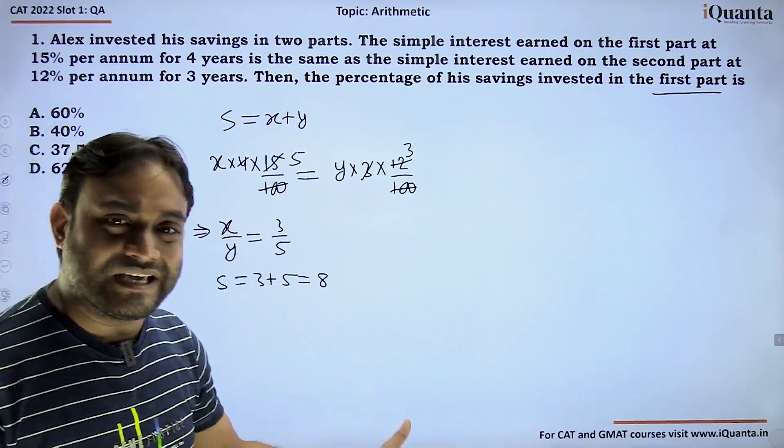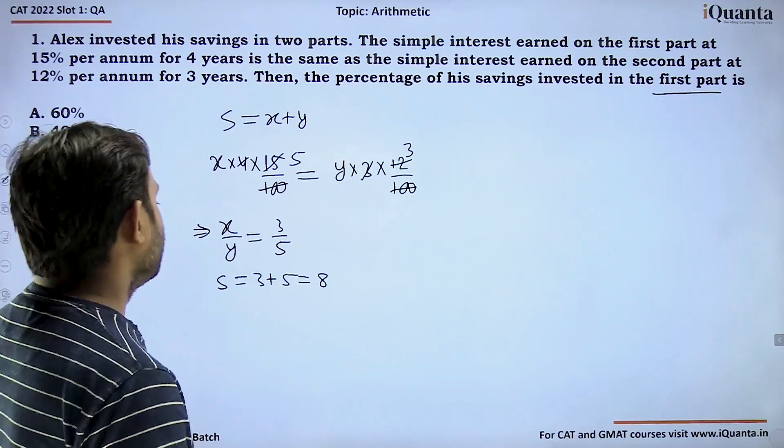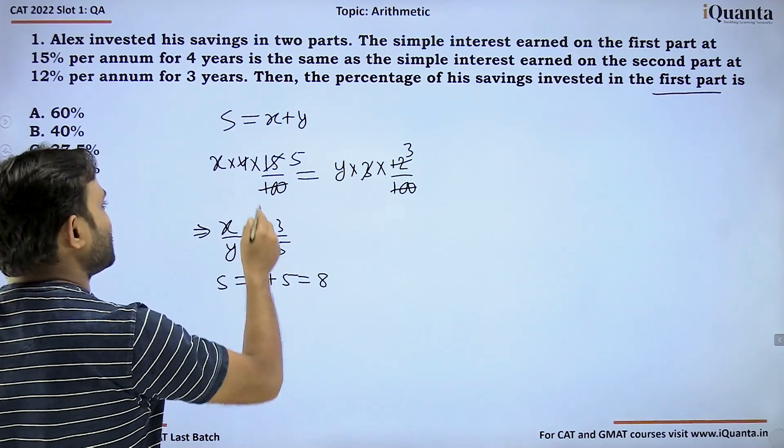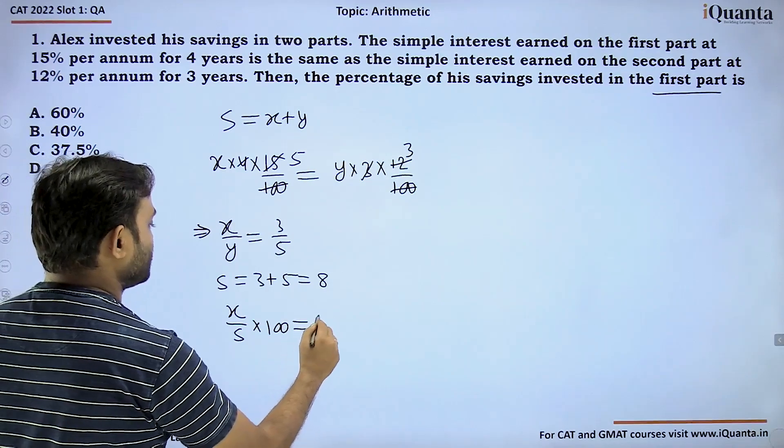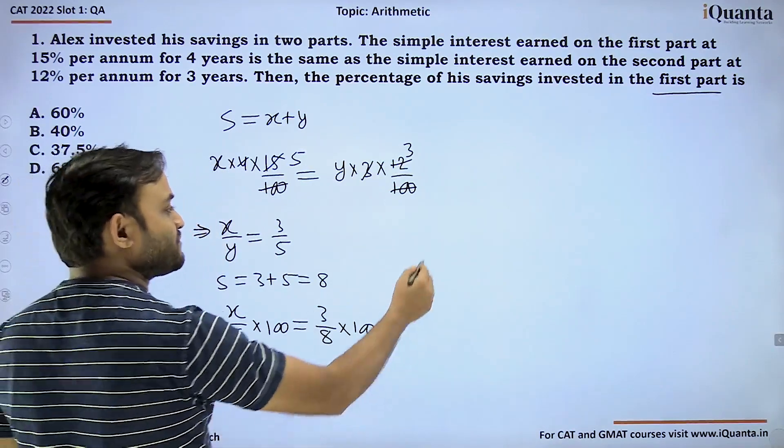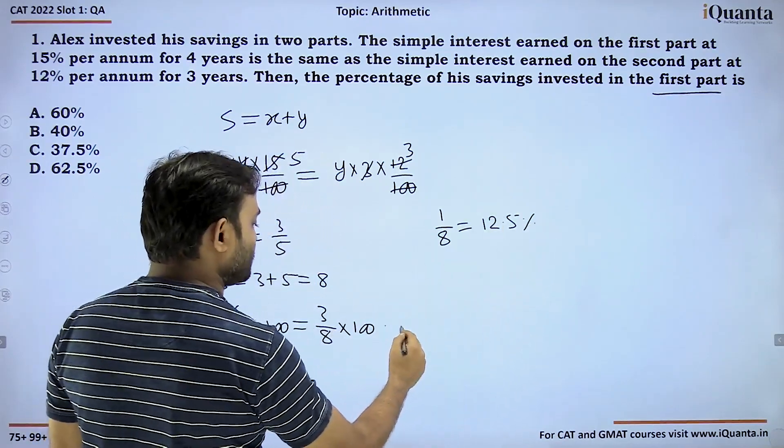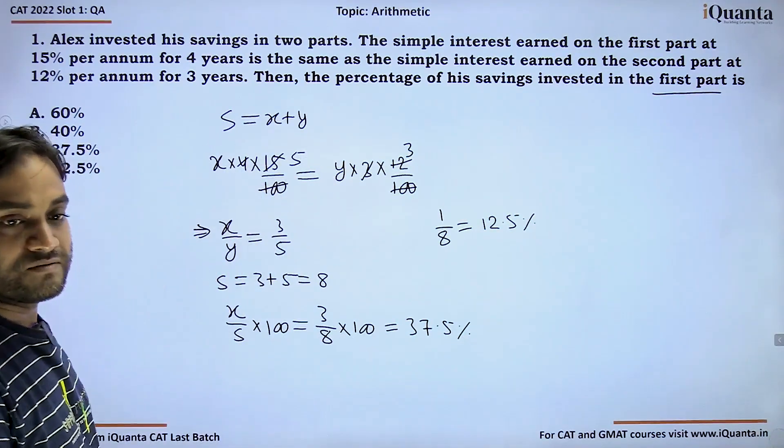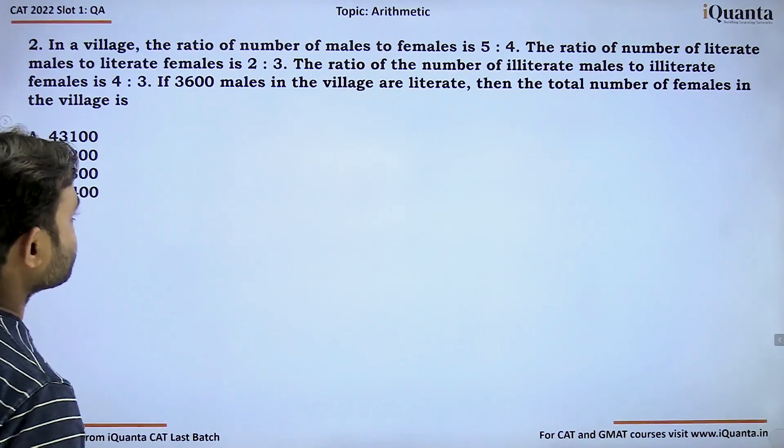If x is 3, y is 5, we can say s is equal to 3 plus 5 which is equal to 8. We need to find x upon s into 100 which will be 3 upon 8 into 100. Since 1 upon 8 is 12.5%, 3 upon 8 will become 37.5%. Thus our answer is option C.